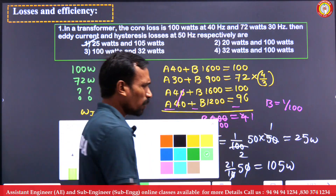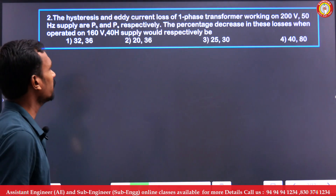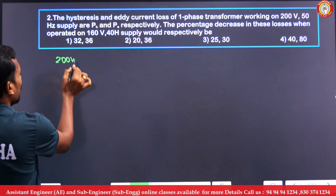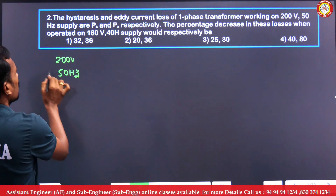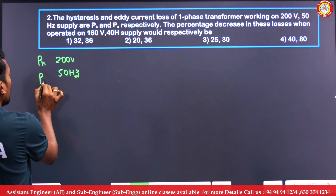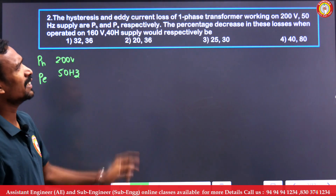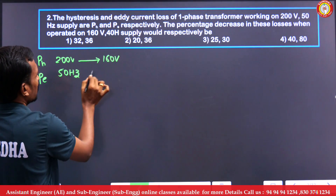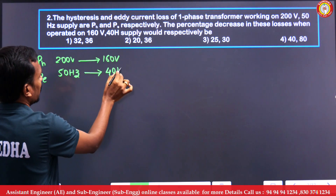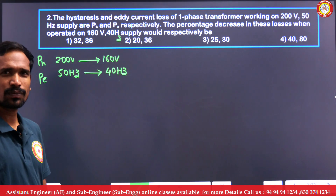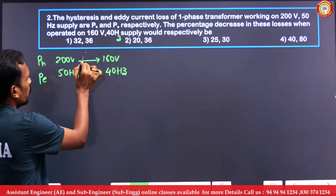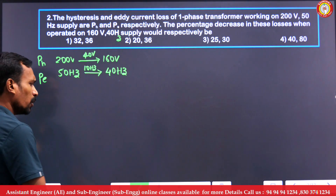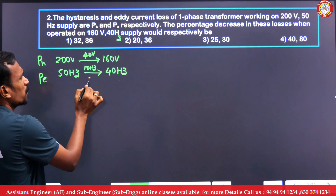Now the second question: the hysteresis and eddy current losses of a transformer are Ph and Pe at 200 volts, 50 Hz. Find the percentage decrease in these losses when operated at 160 volts and 40 Hz. The voltage is reduced by 40 volts and frequency by 10 Hz — both reduced by 20 percent.